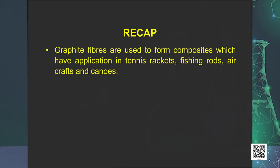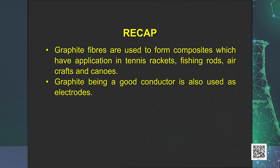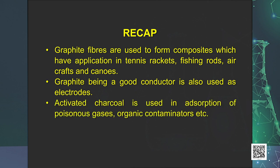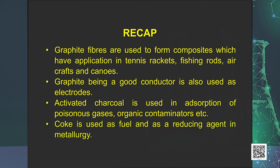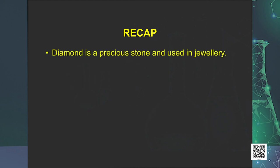Now, let us conclude our session by recalling the discussed concepts and facts. Graphite fibers are used to form composites which have application in tennis rackets, fishing rods, aircrafts, and canoes. Graphite being a good conductor is also used as electrodes. Activated charcoal is used in adsorption of poisonous gases, organic contaminators, etc. Coke is used as a fuel and as a reducing agent in metallurgy. Diamond is a precious stone and used in jewelry.